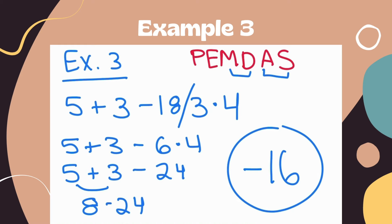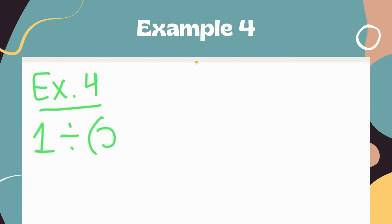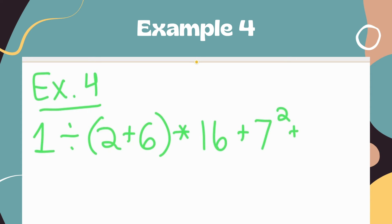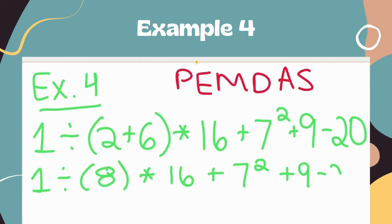We're going to look at two more challenging examples. If you'd like, you can pause the video, try the problems on your own, and then come back to see how you did. For our fourth example, we have 1 divided by the quantity of 2 plus 6, times 16, plus 7 squared, plus 9, minus 20. We do have parentheses, so we simplify 2 plus 6 first to get 8. Then we notice we have an exponent to simplify next.